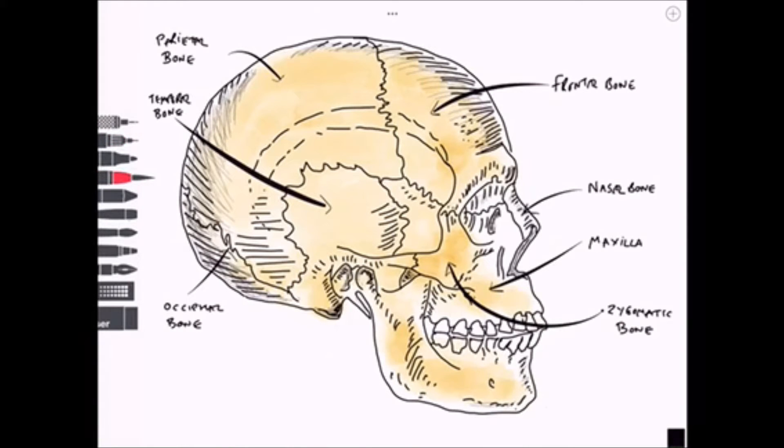Moving on to the mandible. An important structure known as the head of the condylar process contributes to the temporomandibular joint, a synovial joint. Muscles of mastication would attach to the ramus of the mandible. We also have the body of the mandible.